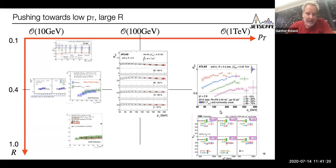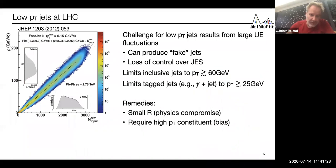For low PT jets at LHC, here we see the area density of the underlying event as a function of something proportional to centrality. For central collisions, you get both the large underlying event and large fluctuations. What can that do to you? It can produce fake jets by fluctuation, promoting a low PT jet to above the cut that you want to make. You can lose control over the jet energy scale.